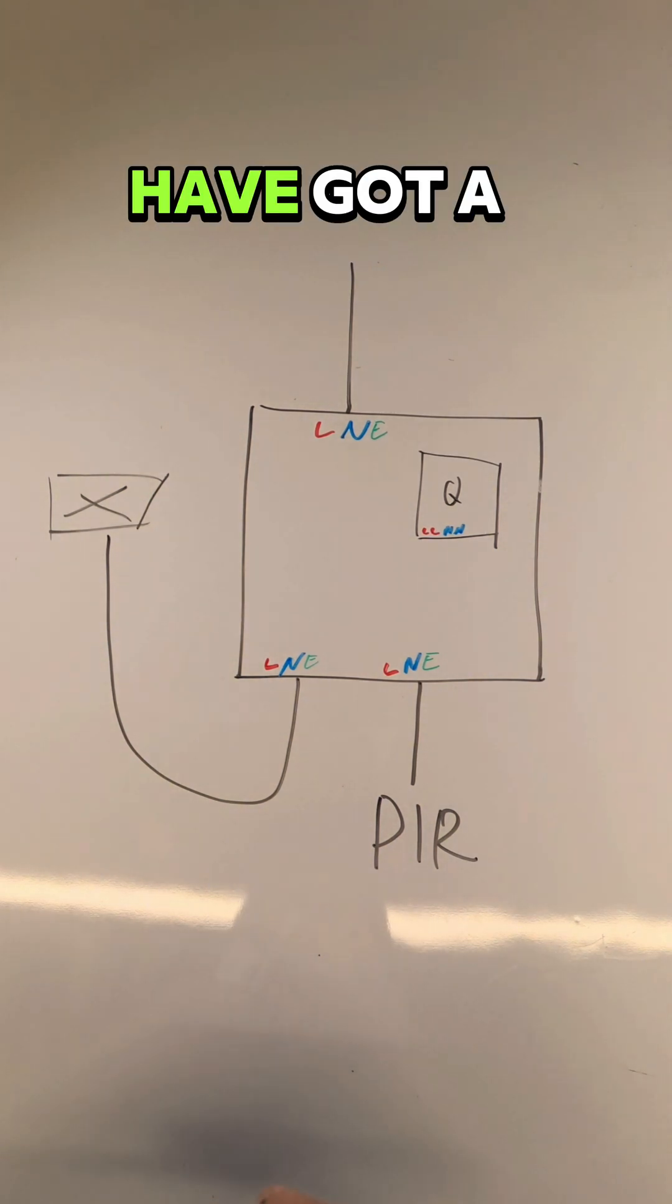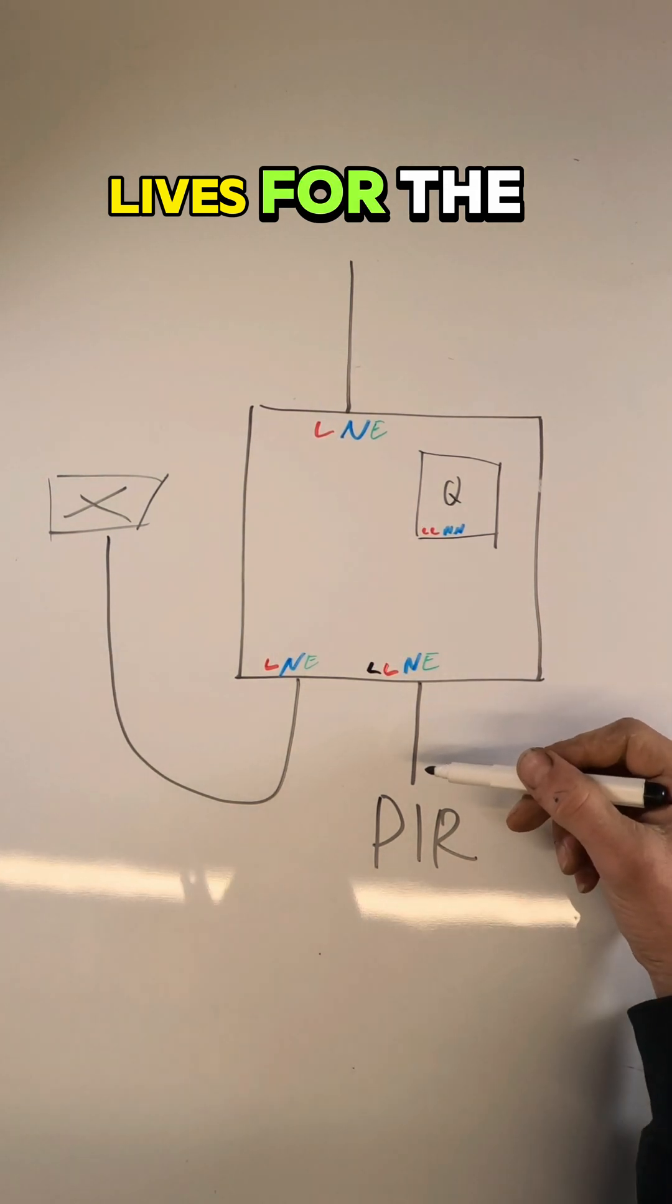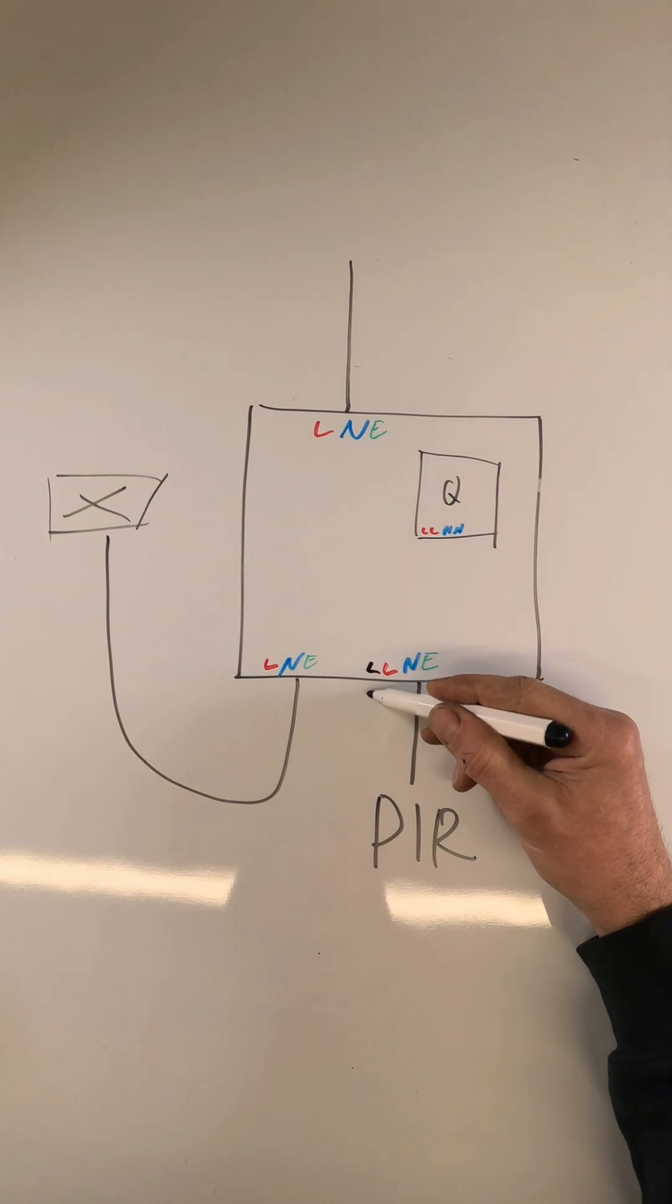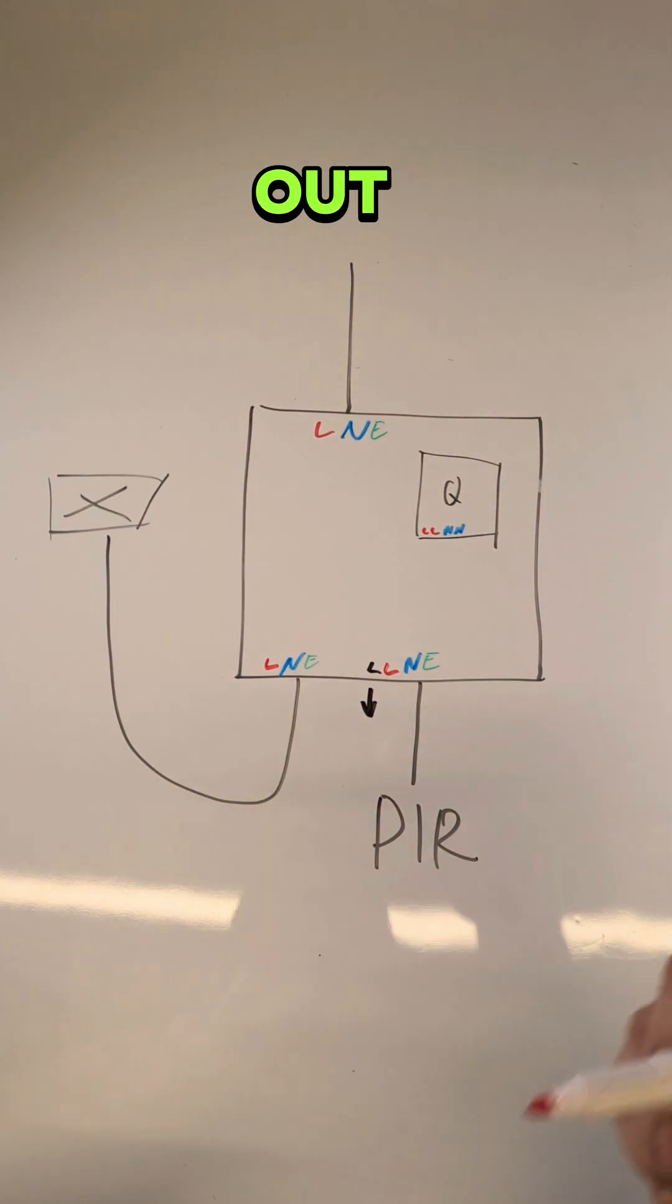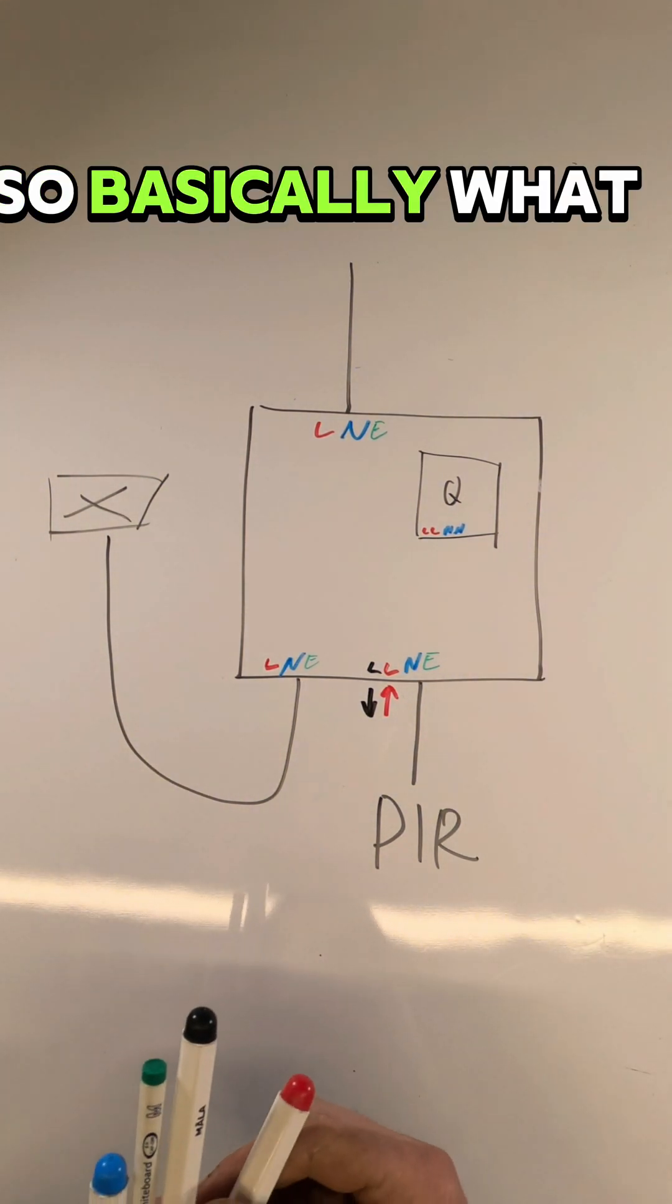But then we have got a permanent live. So there's two lives for the PIR - one is to give it the live, and then the other one is a live going out which will switch on.